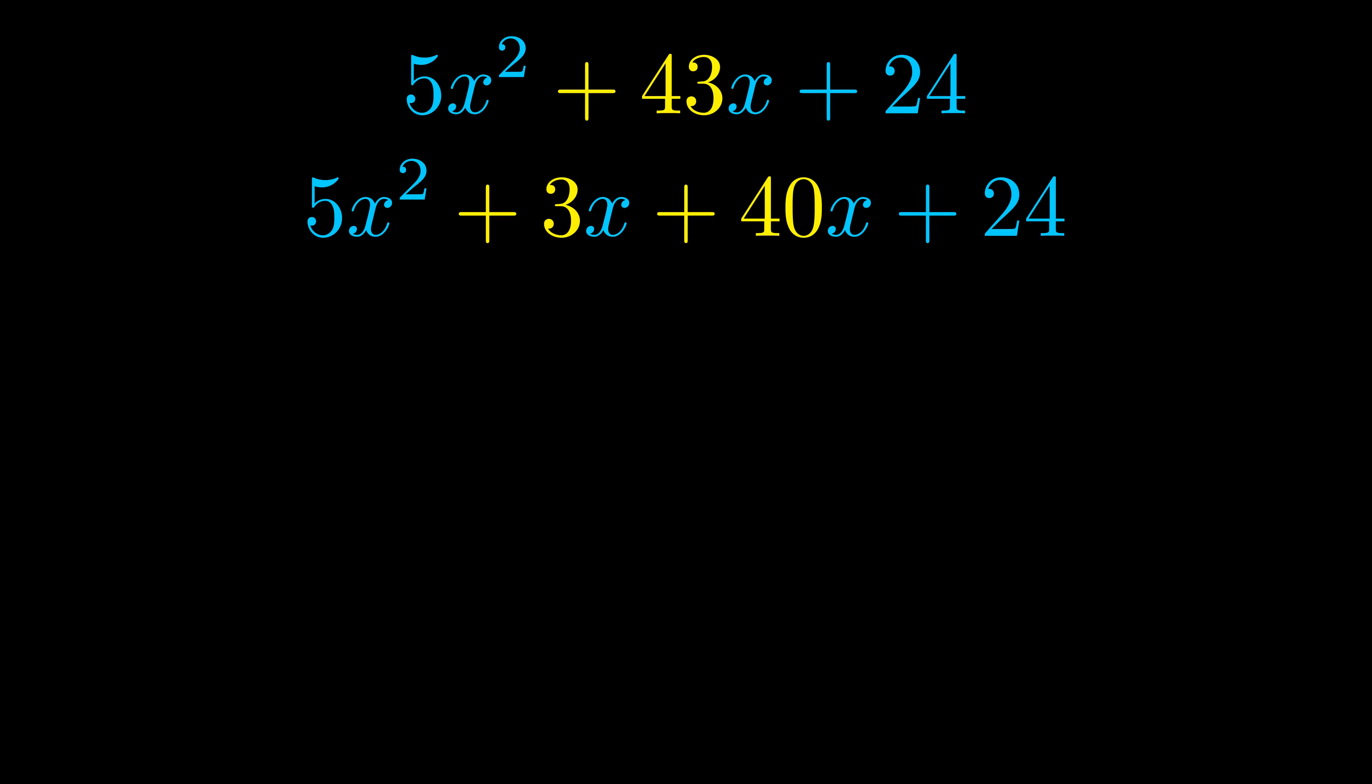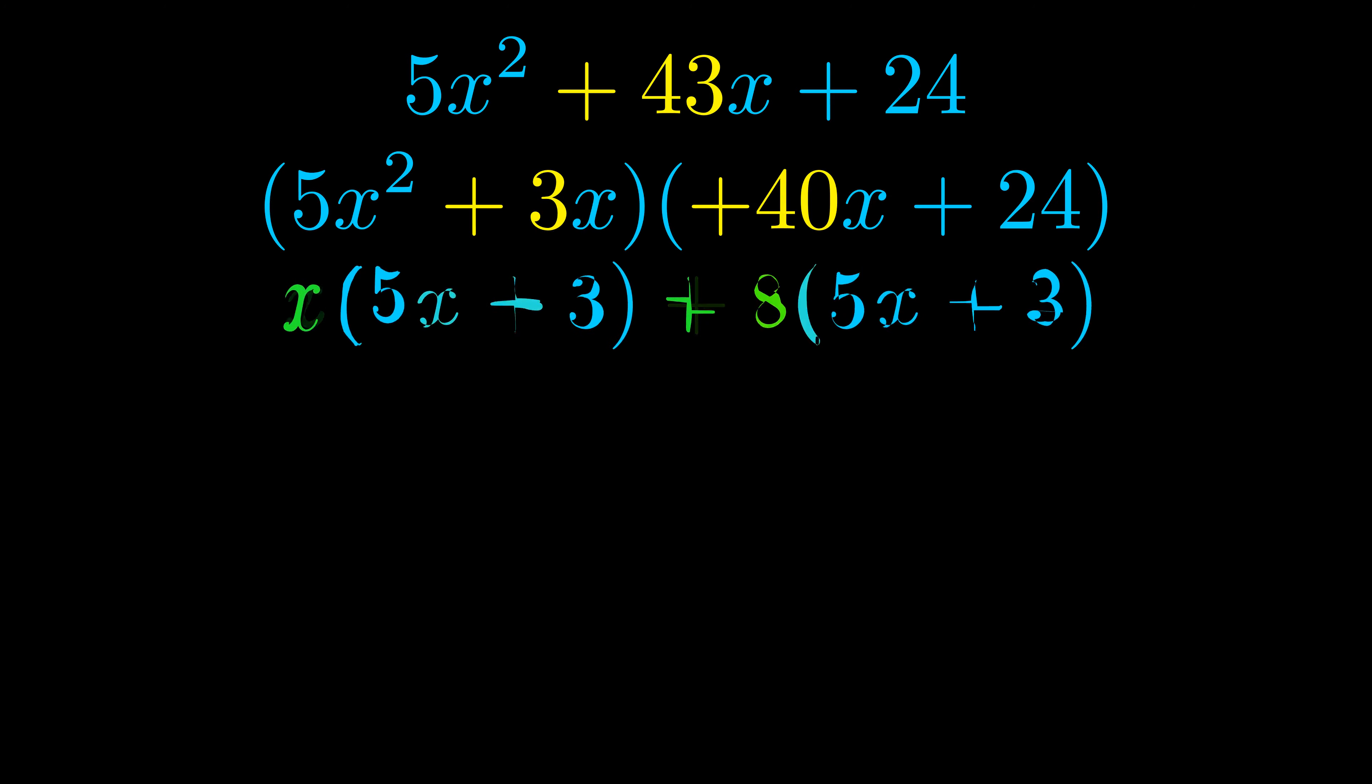Once we've done this we go ahead and put parentheses around the first term and the last term, and we do that so that we can take the greatest common factor out of both terms. We can see the greatest common factor is now outside in green.